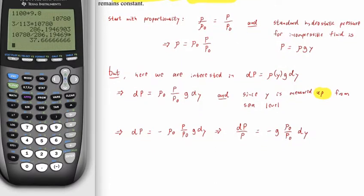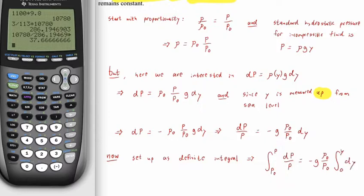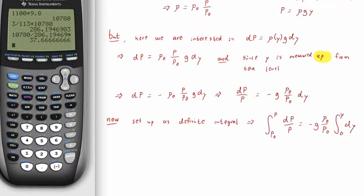I'm going to collect my variables, putting my pressure variable on the same side as my pressure differential. So dp over p equals negative g rho naught over p naught dy. Now I'm going to set this up as a definite integral. We're going to go from p naught to p, and that's dp over p. Y is going to go from 0 to some height y above sea level.